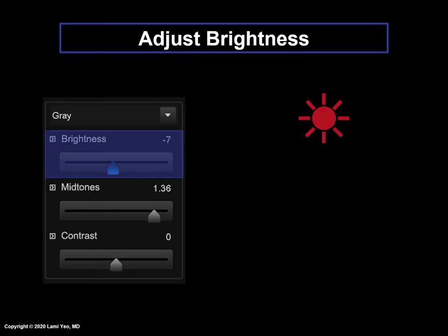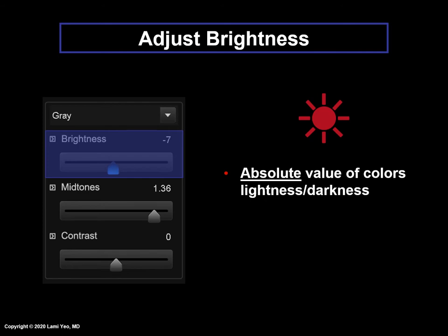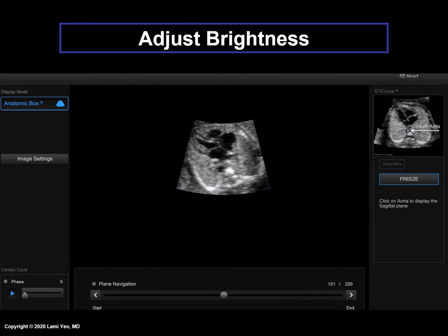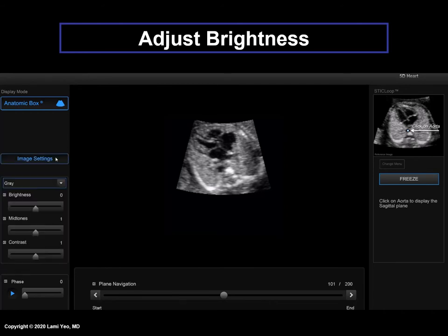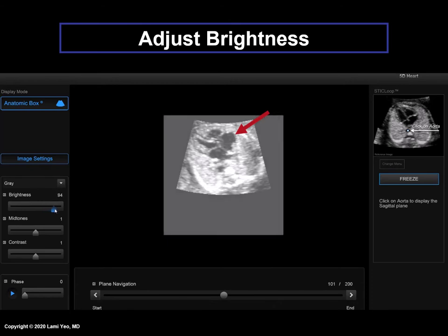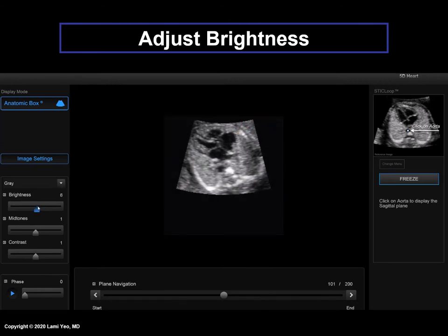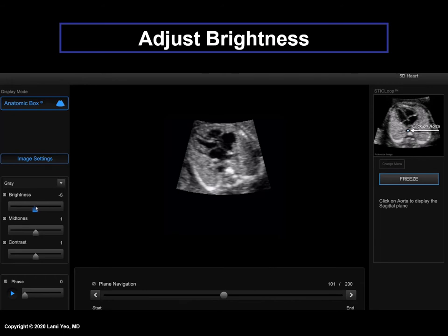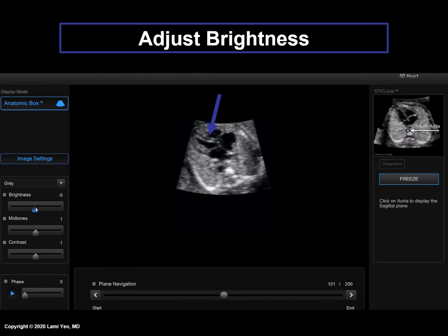Brightness refers to the absolute value of colors — lightness and darkness. For the fetal heart, adjusting the brightness affects the appearance of the blood pool. If increased, there are more speckles in the blood pool of the cardiac chambers. If decreased, the cardiac chambers become very dark. However, if brightness is decreased too much, one can falsely create septal defects, such as in the ventricular septum. Therefore, be careful with adjusting the brightness.